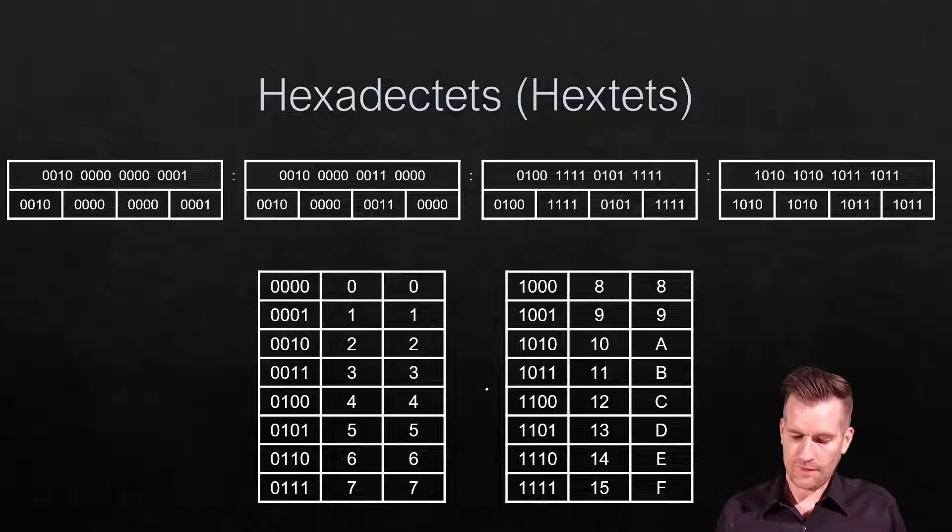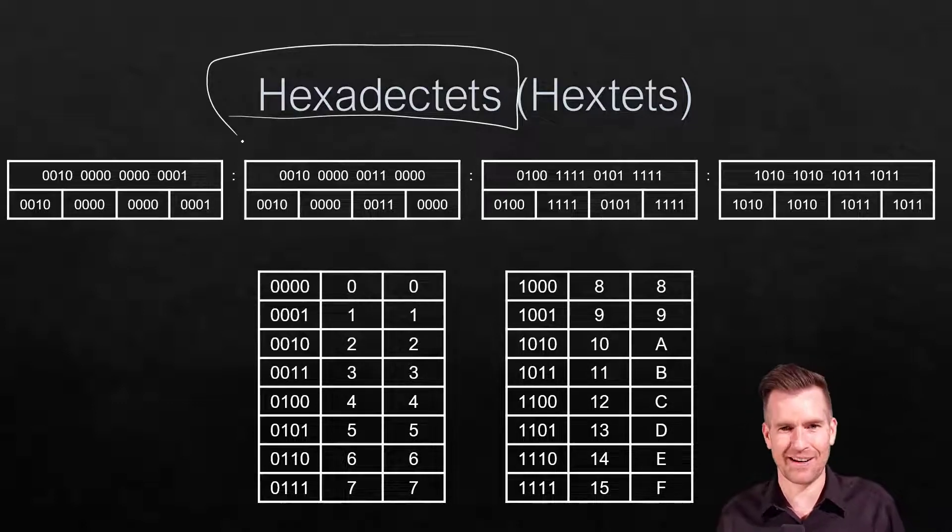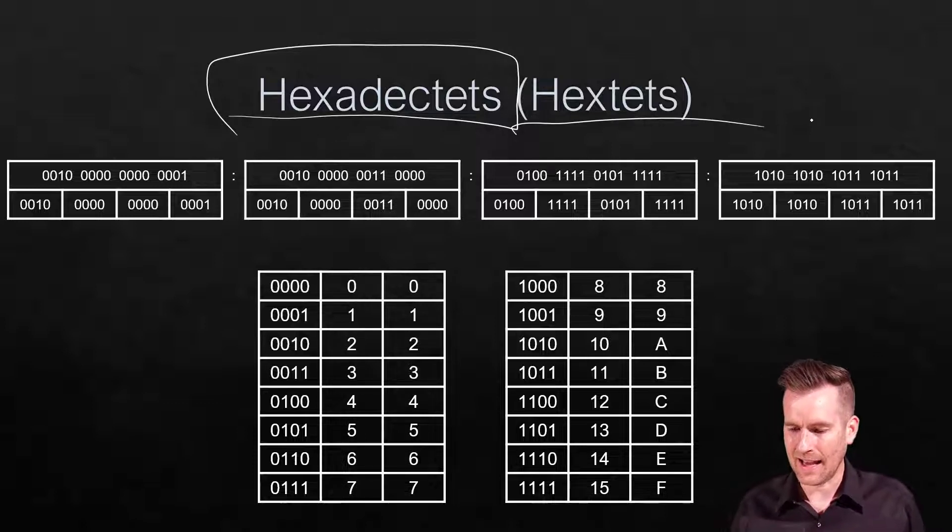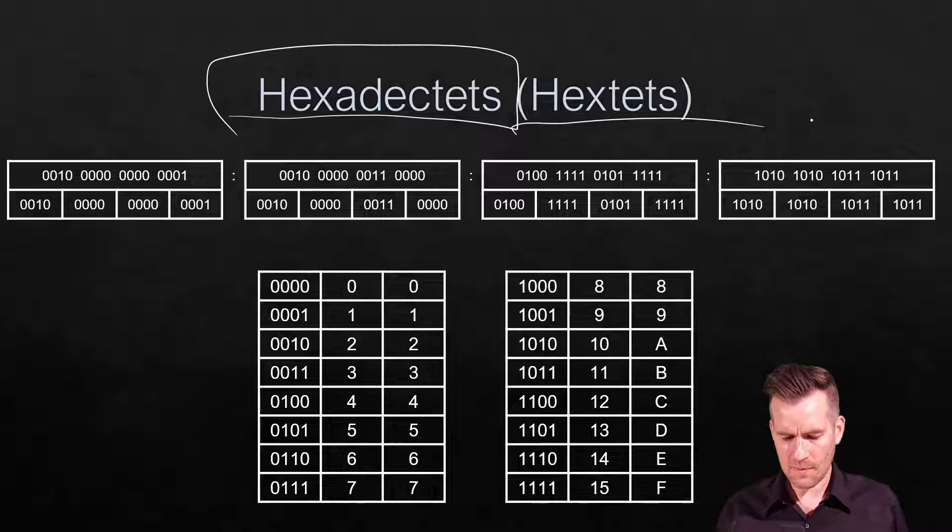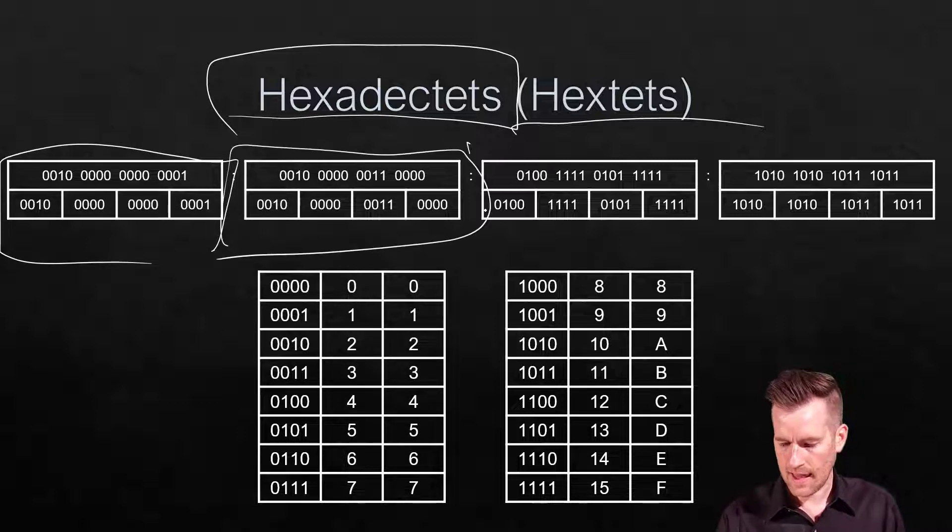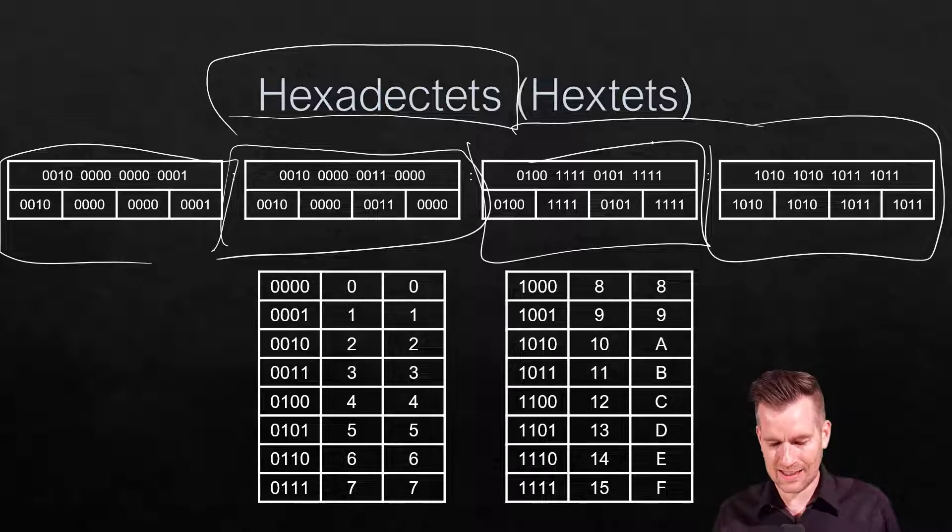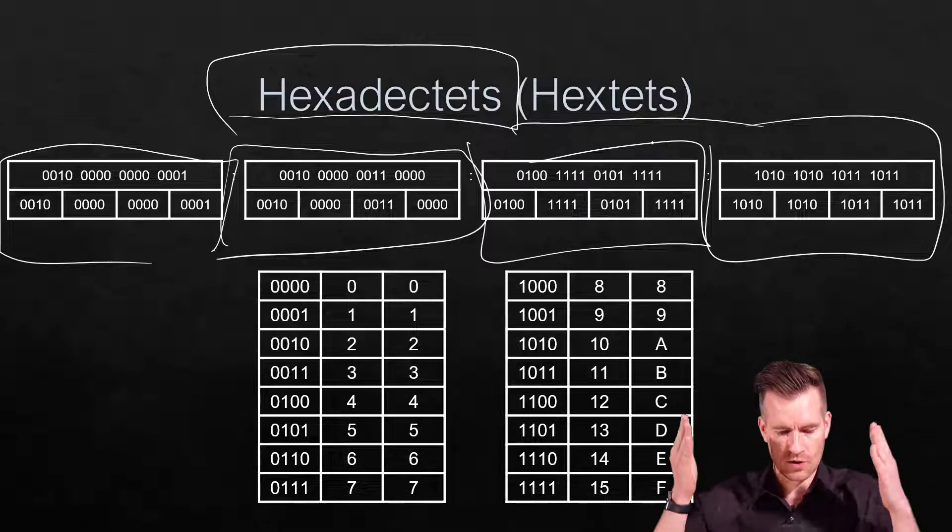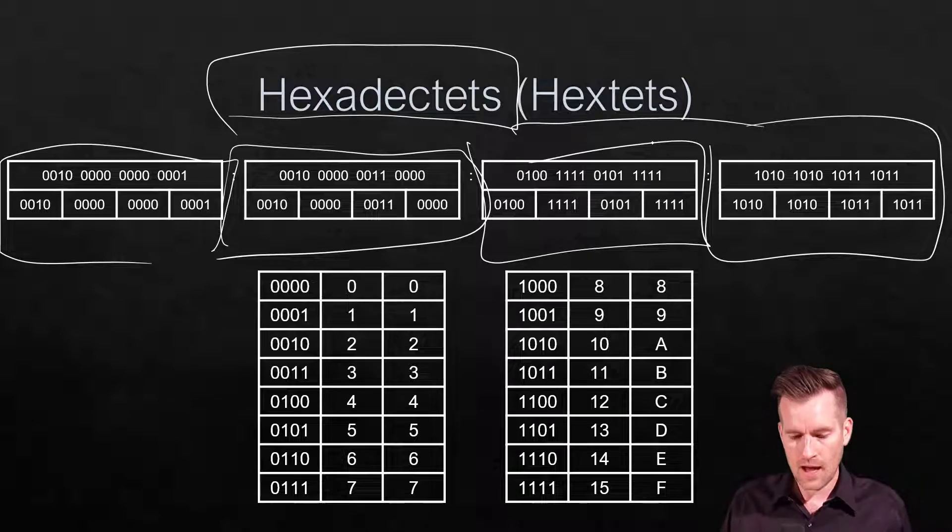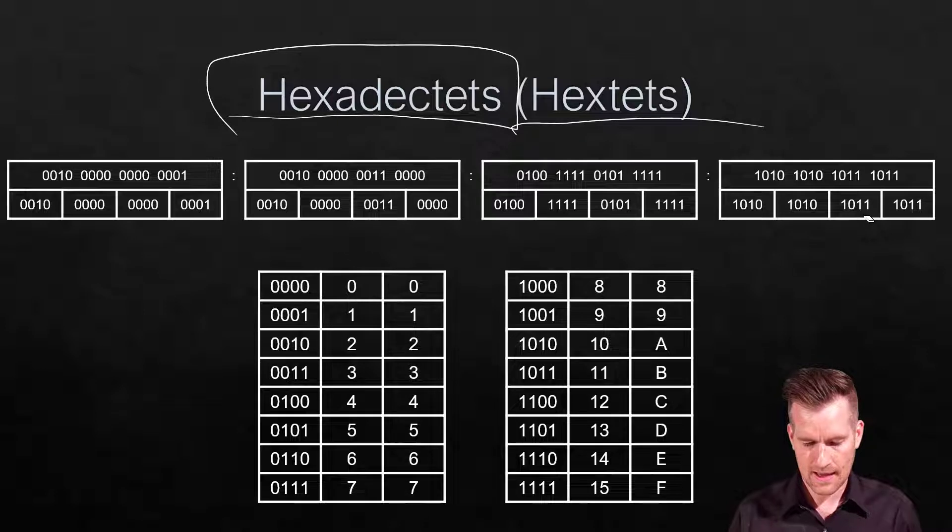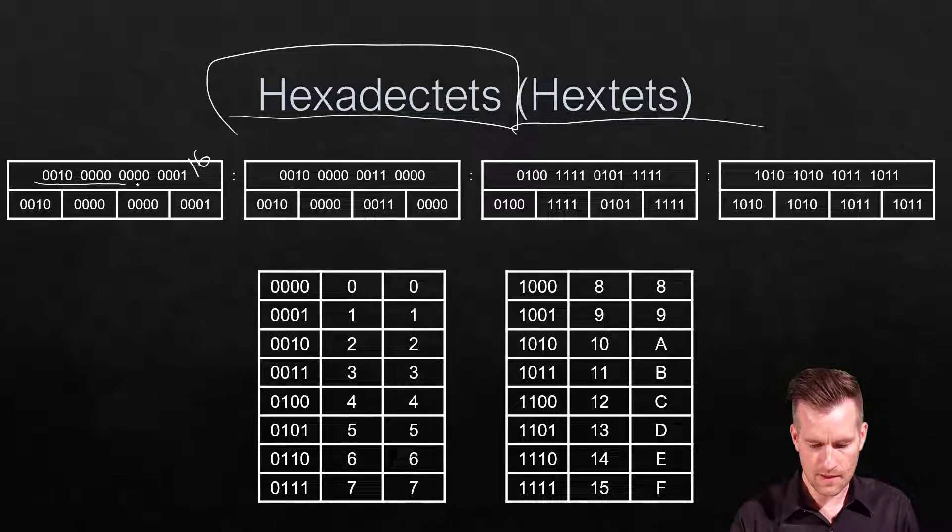Let's look at hextets, or officially hexadectets - we just call them hextets. They're also known as quibbles or quad nibbles. I'm showing four hextets here, though IPv6 has eight total - I couldn't fit them all on screen. Each hextet is 16 bits total, broken into groups of four bits each.